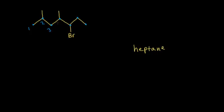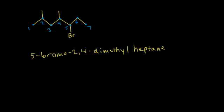So one, two, three, four, five, six, and seven. I have two methyl groups at two and four, so that's 2,4-dimethyl. Now I can worry about my halogen, which is at carbon number five, so I have 5-bromo. When you have bromine, you name it 5-bromo. So 5-bromo-2,4-dimethylheptane is the correct IUPAC name. You have to follow the alphabet rule — bromo comes before methyl because B comes before M in the alphabet.